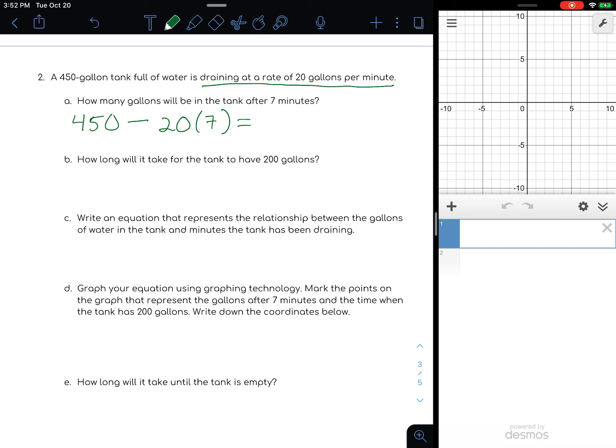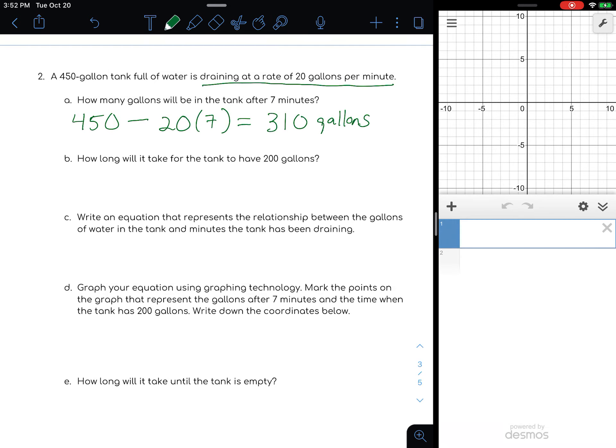Part b: How long will it take to have 200 gallons? You have different strategies. You could start making a table of values or use logic and reasoning. If we did a table of values, after 7 minutes we had 310. At 8 minutes it would be 290, at 9 minutes 270, at 10 minutes 250, 11 minutes 230, 12 minutes 210, and at 13 minutes you'd be down to 190. So it crosses 200 gallons between 12 and 13, exactly halfway.